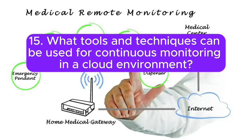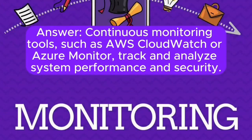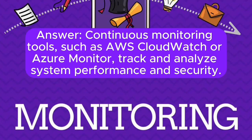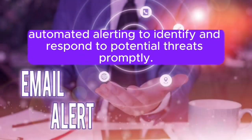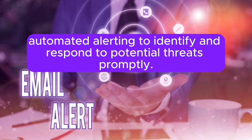15. What tools and techniques can be used for continuous monitoring in a cloud environment? Continuous monitoring tools, such as AWS CloudWatch or Azure Monitor, track and analyze system performance and security. Techniques include log analysis, intrusion detection systems, and automated alerting to identify and respond to potential threats promptly.